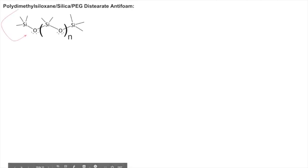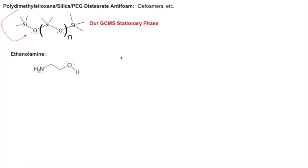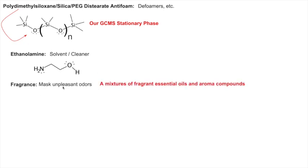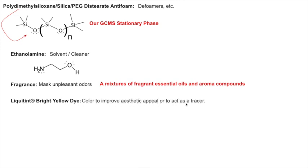There are also anti-foam components: polydimethylsiloxane, silica, polyethylene glycol distearates — these are defoamers so when you spray it, it doesn't foam up too much. Interestingly, polydimethylsiloxane is also what's used as the stationary phase in GC-MS. Then there's ethanolamine, a common solvent and cleaner and polar molecule. There are also fragrances to mask unpleasant odors — a mixture of essential oils and aroma compounds — and colors to improve aesthetic appeal.